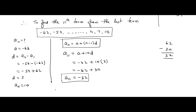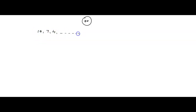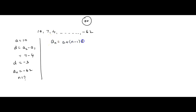We have one more method to solve the same problem. Given the sequence 10, 7, 4 and so on, minus 62 — first let us find how many total terms are there. The first term is 10, the common difference is 7 minus 10 = minus 3, and the nth term is minus 62. We use the formula aₙ = a + (n − 1)d to find n.